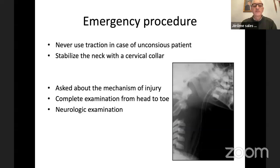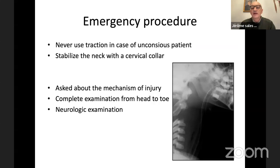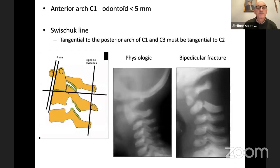What to do in an emergency? First, never use traction in case of an unconscious patient. Stabilize the neck with a cervical collar. After that, ask about the mechanism of injury and do a complete examination of the child from head to toe. You must also do a very important neurologic examination to see if there is a neuro deficit or not. If you can do an x-ray, you have to remember some rules.